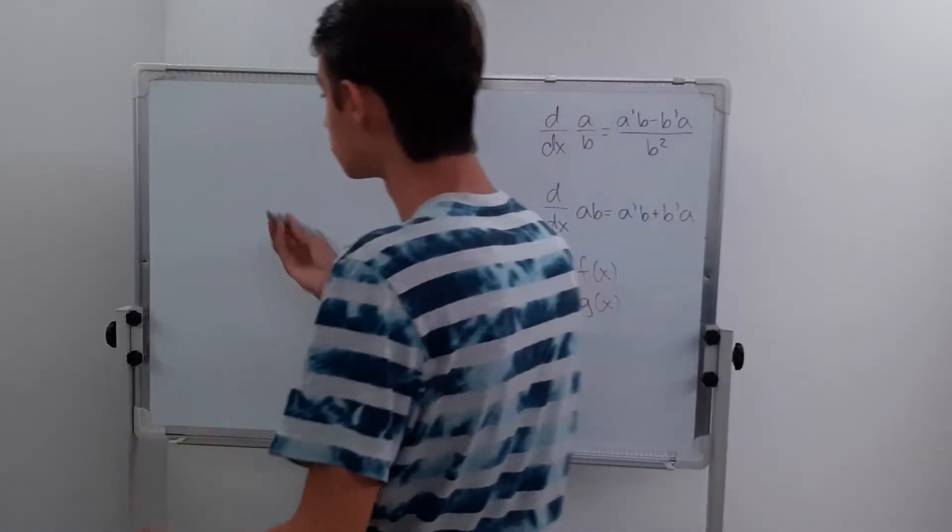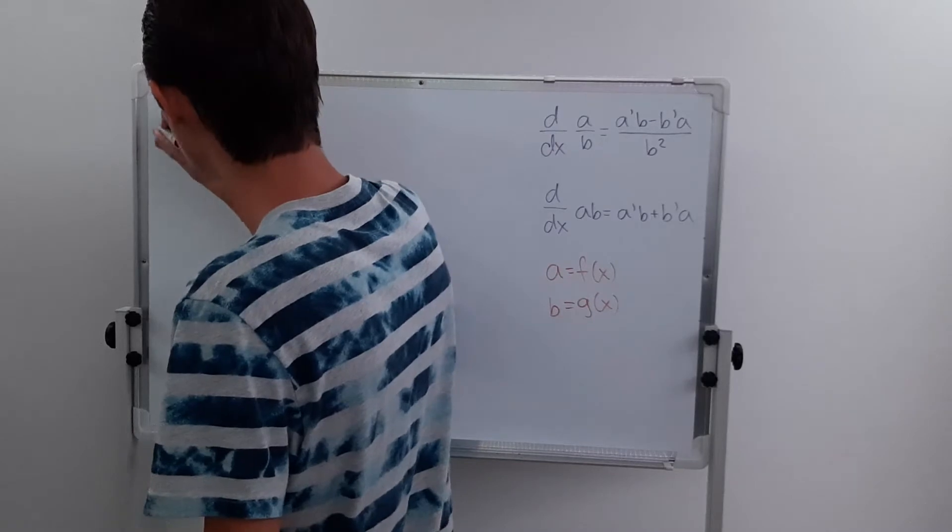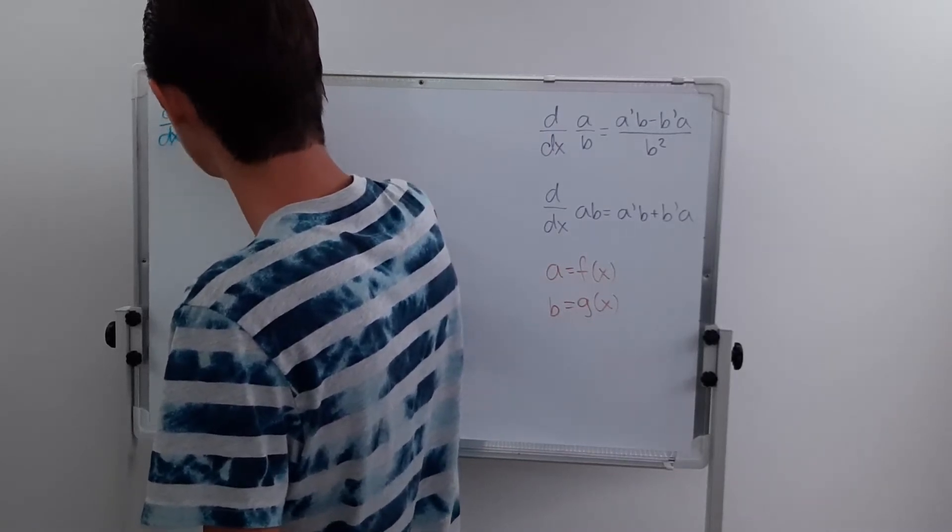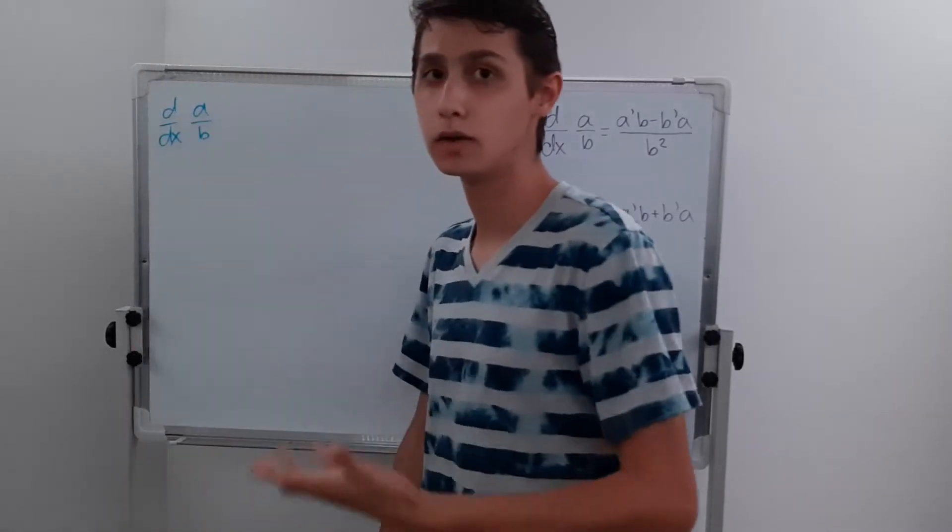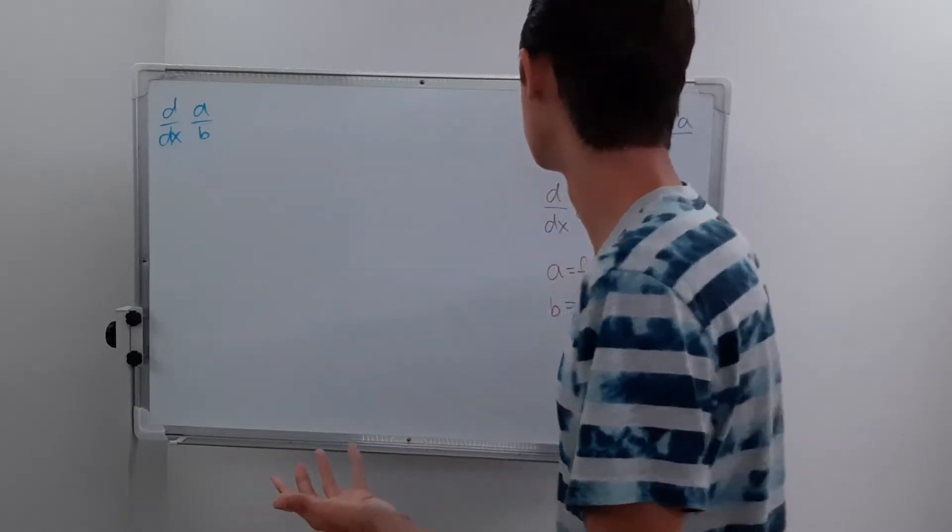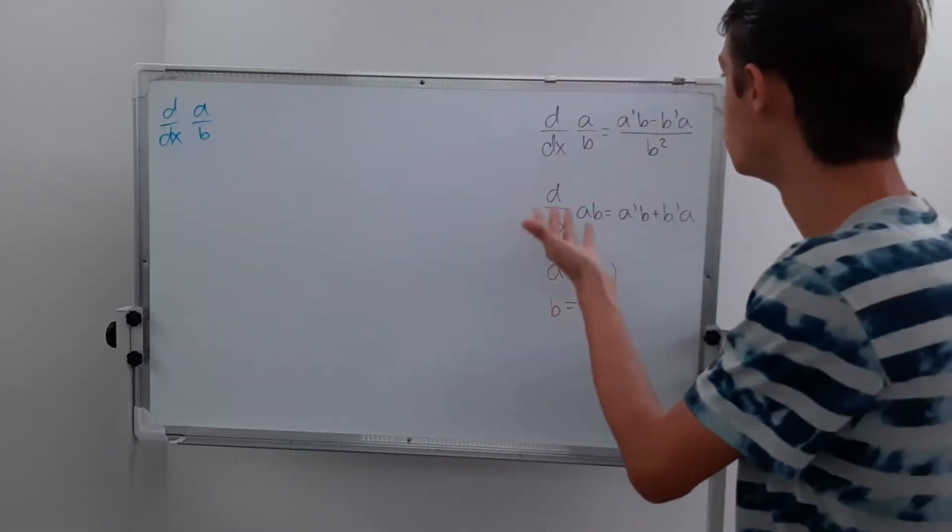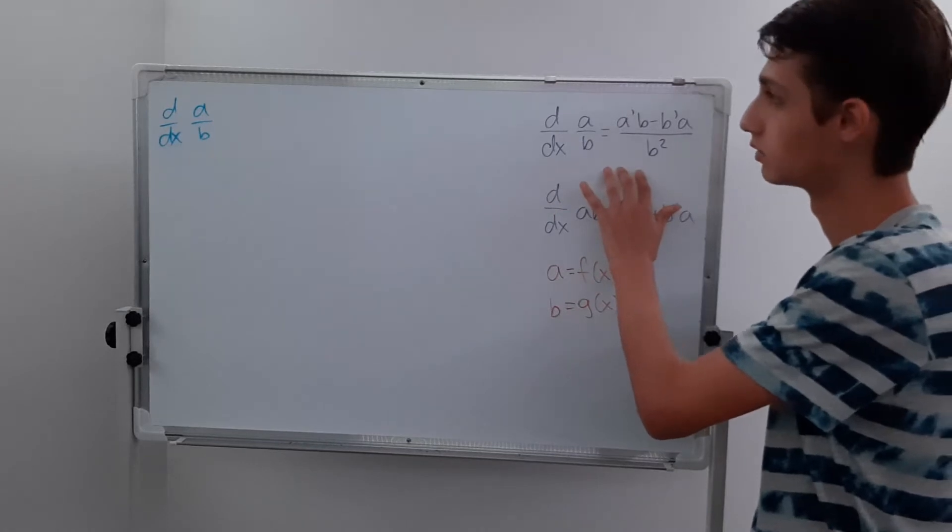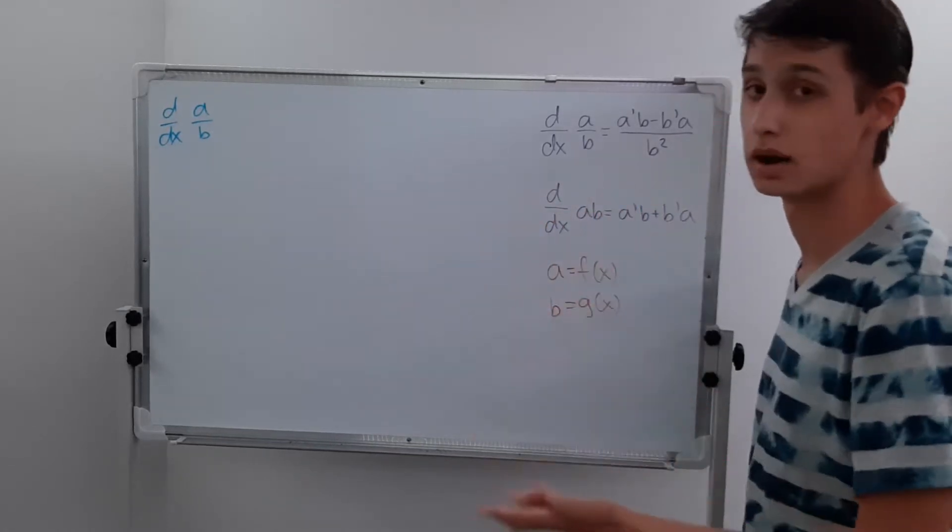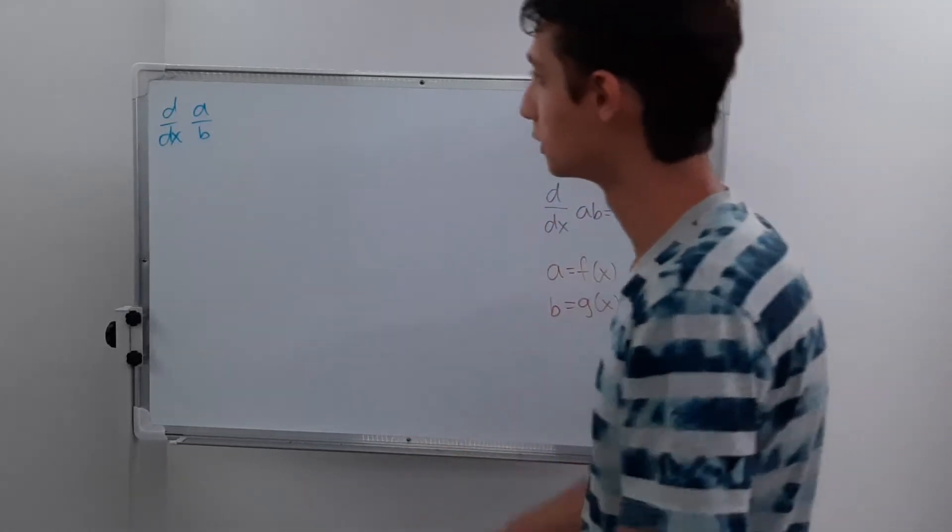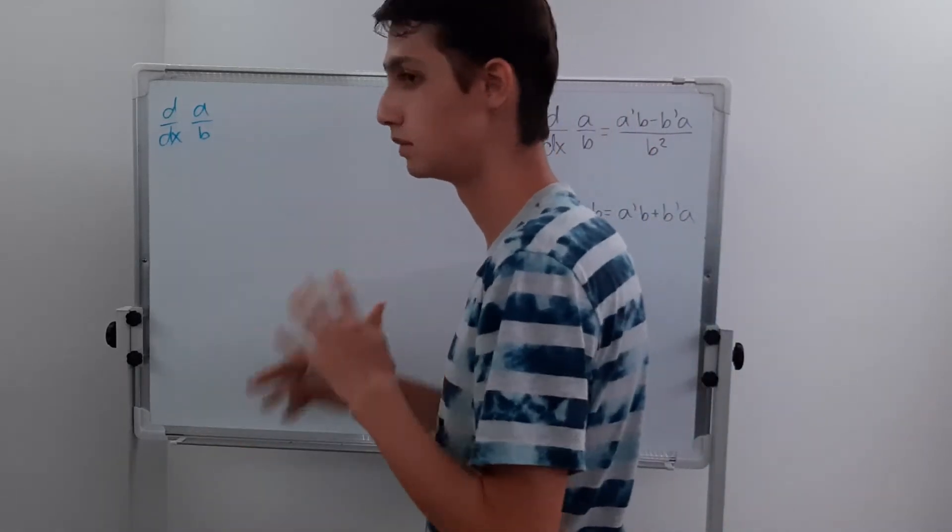So we're going to start with a function d/dx of a over b. And normally we would use the quotient rule to solve this, but what if we try to use the product rule to solve it? So again, they're functions of x, so it's not like just a and b, it's technically f and g of x.